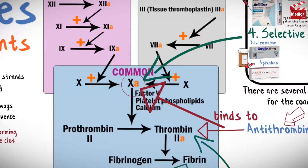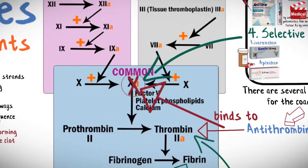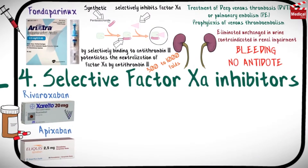Now let's talk about the other two drugs: rivaroxaban and apixaban. Both agents are oral inhibitors of factor 10a. They bind to the active site of factor 10a, preventing its ability to convert prothrombin to thrombin.